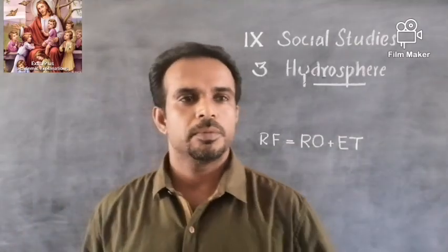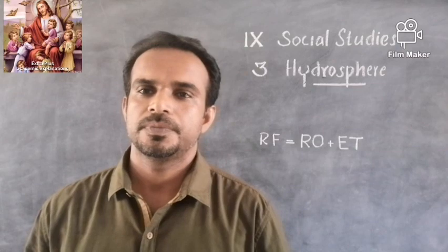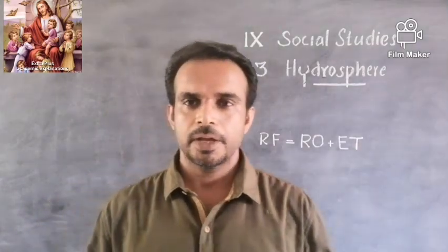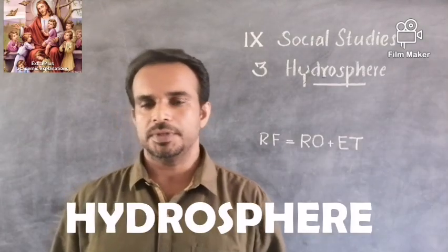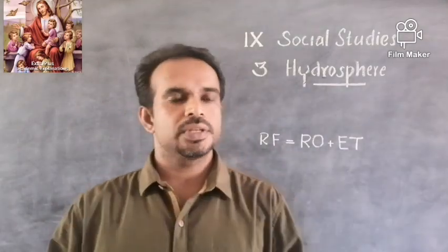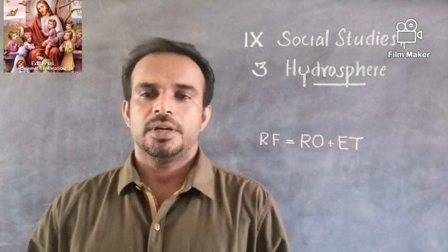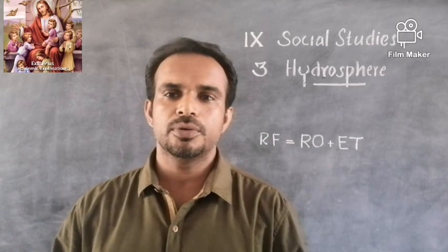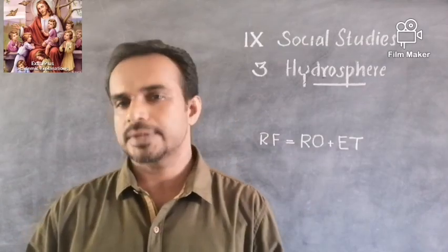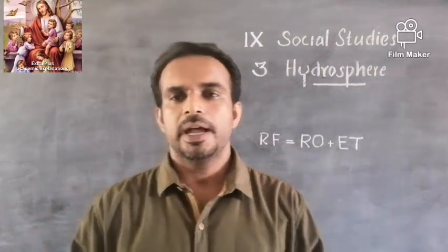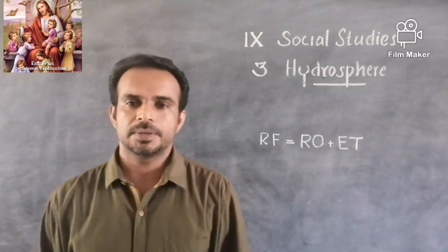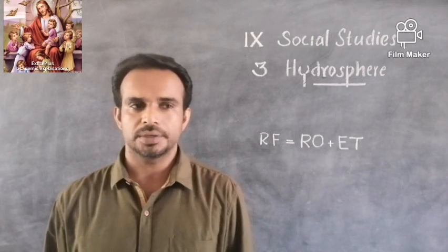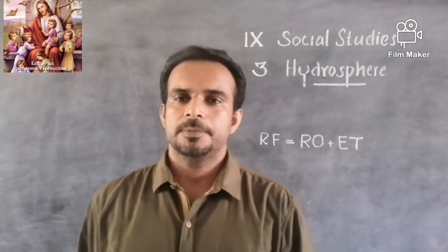Good morning everyone, welcome back to ninth class Social Studies. In the last classes we discussed about the lithosphere, and today we are moving to the third chapter: hydrosphere. While introducing the chapter, we tried to define the hydrosphere as a rim of water around the earth's surface. The word hydrosphere comes from a Greek word 'hydro' which means water.